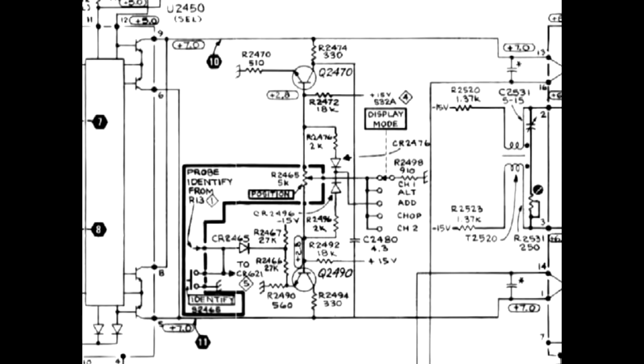The voltage at points 10 and 11 was about 3 volts instead of the 7 it should have been. I removed Q2470 and 2490. The voltage was now correct and the gain was correct.